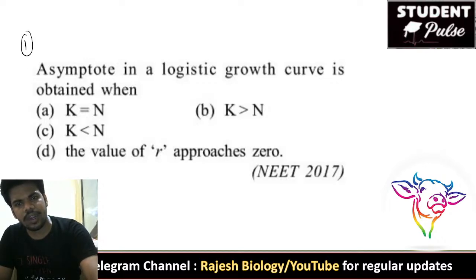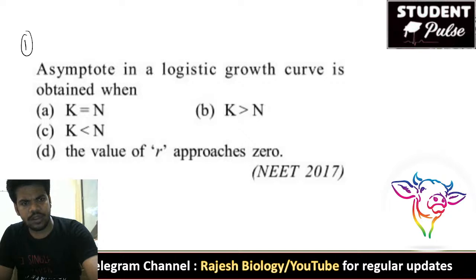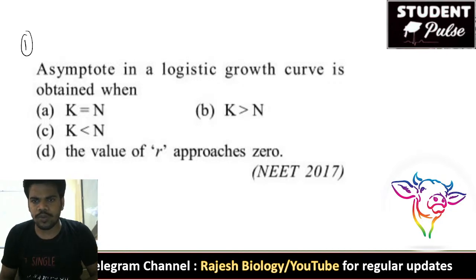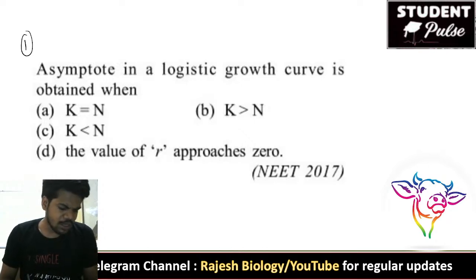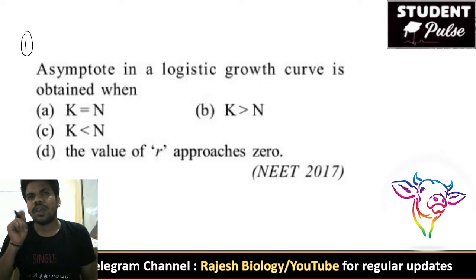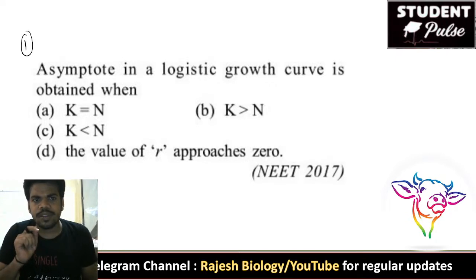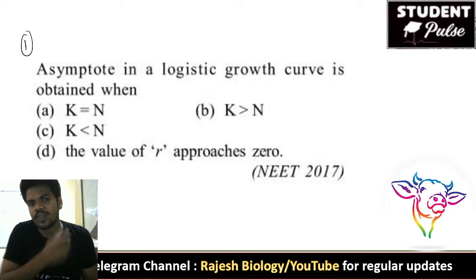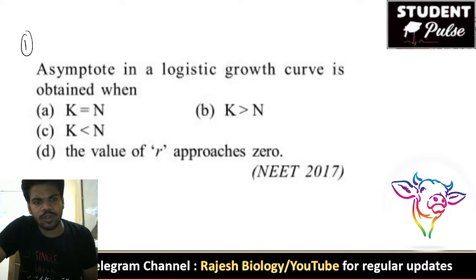The asymptote is obtained when K is equal to N, or when K is greater than or equal to N, when K is less than N, or when the value of r approaches zero. In the logistic growth curve equation, dN/dt = rN × (N minus K) / N. If K is equal to N, both are the same, so automatically r × N equals zero. So the right answer for the first question is option A — when K is equal to N.